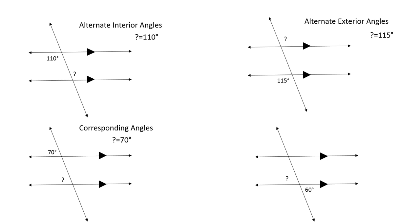Next, we have some crossing lines with angles that are opposite each other, so these 2 are vertical angles. Vertical angles are equal. So if this angle is 60 degrees, then the question mark will also be 60 degrees.